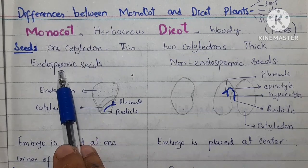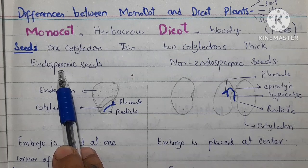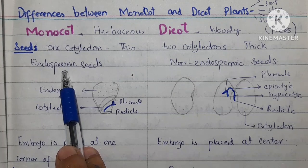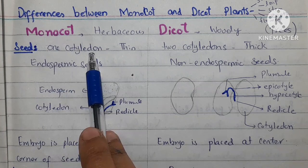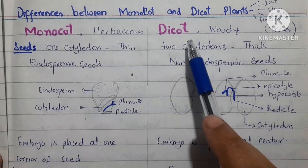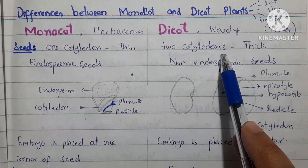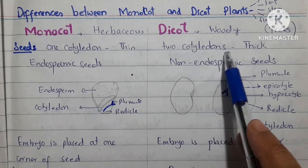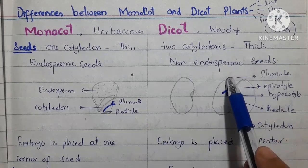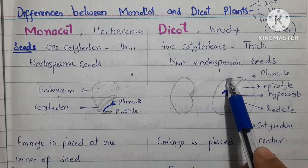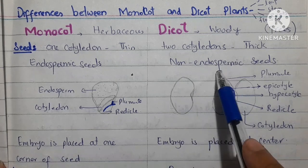The cotyledon and endosperm are both responsible for keeping food in reserve. First there is endosperm, and then it is replaced by the cotyledon — but in the case of monocot, it is not fully replaced; it still exists. In case of dicot, the word means two cotyledons. There are two cotyledons, and these cotyledons are thick. All the endosperm is converted into cotyledons, so these seeds are called non-endospermic seeds.